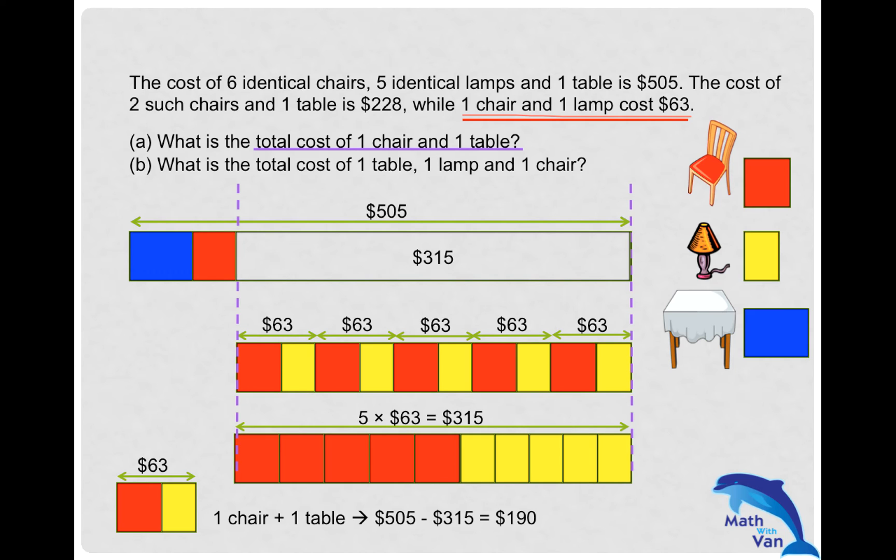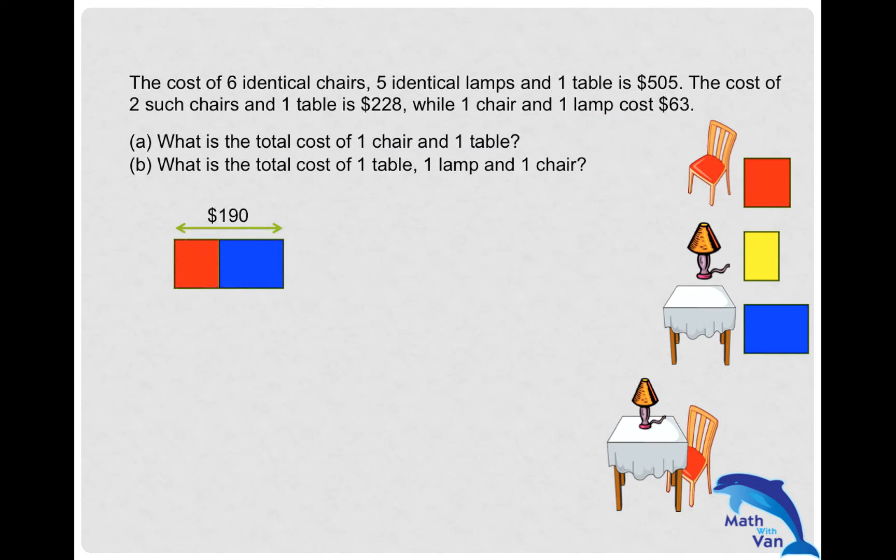Let's recap what we found for part (a). As I said, part (a) will lead you to find part (b). Now that you've found one chair plus one table is $190, you need to find the cost of one lamp to solve part (b).